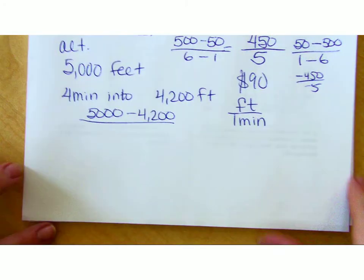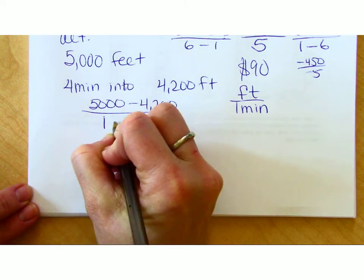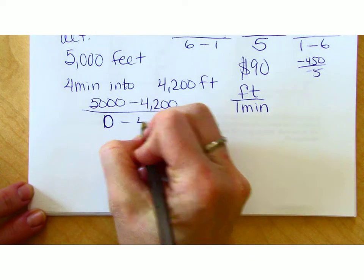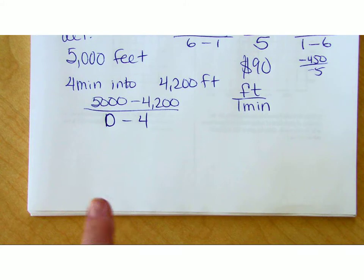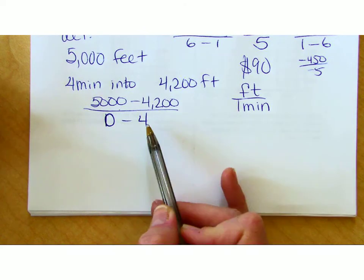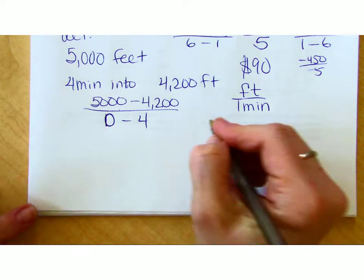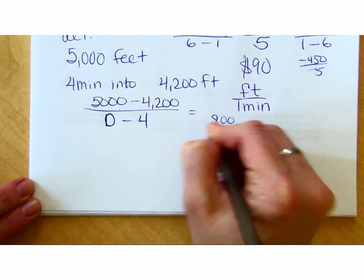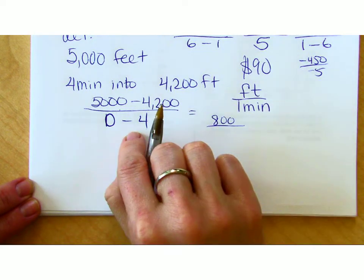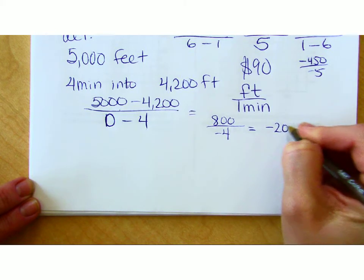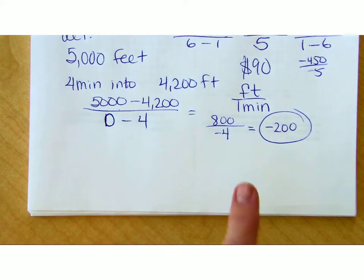Now watch this, because this is important. I went from minute zero, because I hadn't even jumped out of the plane yet, from minute zero to minute four. This is the change. My altitude changed by this much, and my time changed from zero minutes to four minutes. So my altitude change was negative 800, and my minute change was four. This is negative 800 over four, which equals negative 200. That's my rate of change.